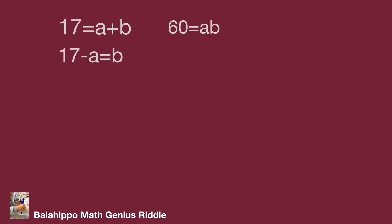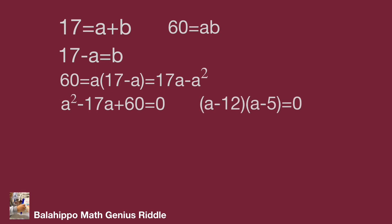And then substitute b by 17 minus a. The new equation becomes a squared minus 17a plus 60 equals 0. Factorization: we have quantity a minus 12 multiply quantity a minus 5 equals 0.